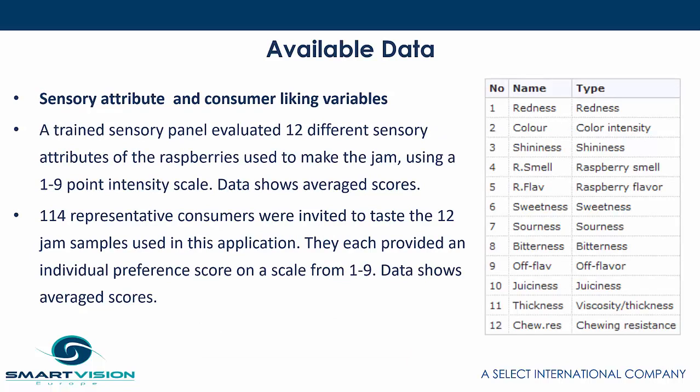Very importantly, we also have sensory attribute and consumer liking variables. A trained sensory panel of assessors evaluated 12 different attributes of the raspberries used to make the jam using a scale of one to nine points in intensity, and the data shown represents average scores. Additionally, 114 representative consumers were invited to taste the 12 different samples and each provided an individual preference score on a scale of one to nine, with the data showing their average scores.